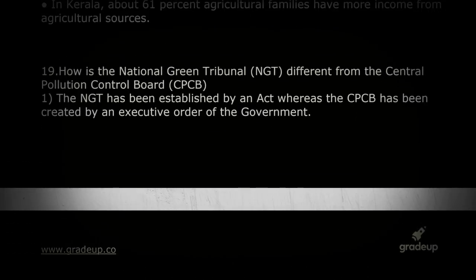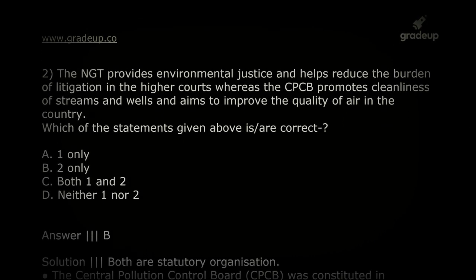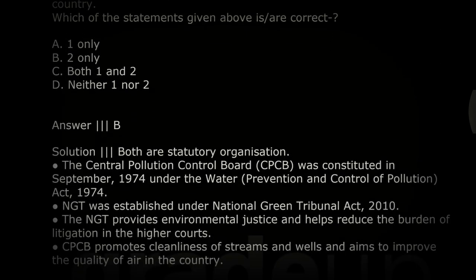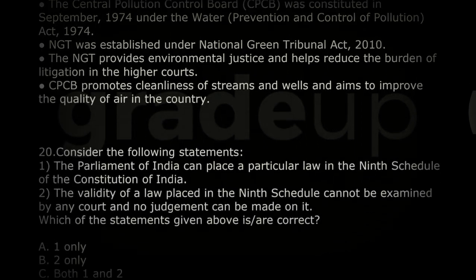How is NGT different from the Central Pollution Control Board? NGT has been established by an Act whereas CPCB was created by executive order — that's not fully correct. The correct distinction is: NGT provides environmental justice and helps reduce the burden of litigation in the higher courts, whereas CPCB promotes cleanliness of streams and wells and aims to improve air quality. CPCB was constituted in September 1974 under the Water Prevention and Control of Pollution Act, 1974. NGT was established under the National Green Tribunal Act of 2010, making it a younger body.